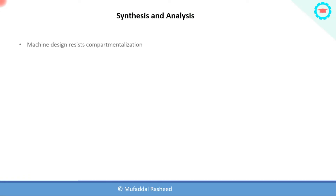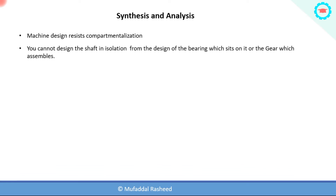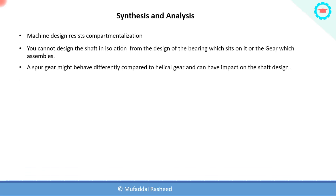Machine design as an activity resists compartmentalization. For example, if you want to design a rotating machinery that has a shaft, a gear, and bearings, you cannot design the shaft in isolation from the bearing or the gear. The gear assembles onto the shaft and the bearing assembles onto the shaft, so they must be designed in unison. A spur gear might behave differently compared to a helical gear, and that can have an impact on the shaft design as well.